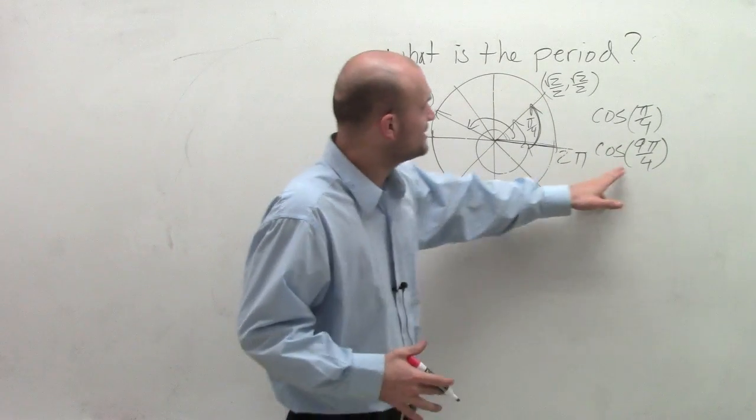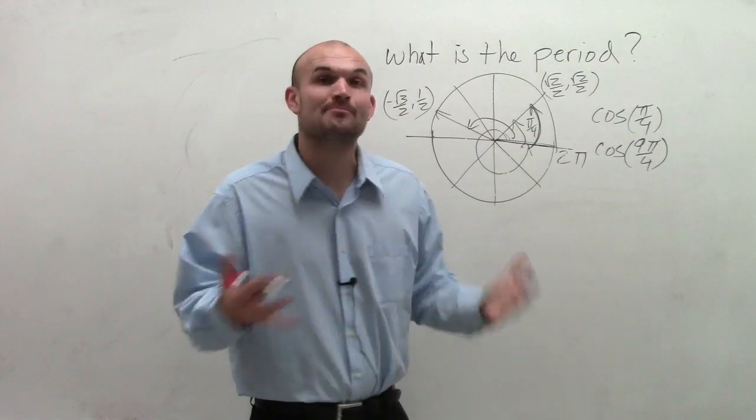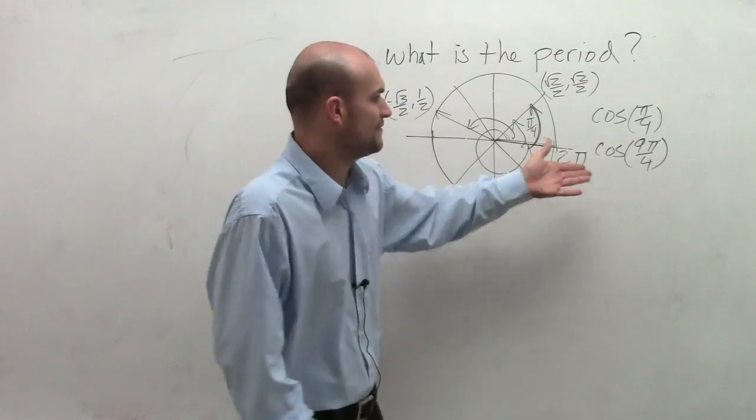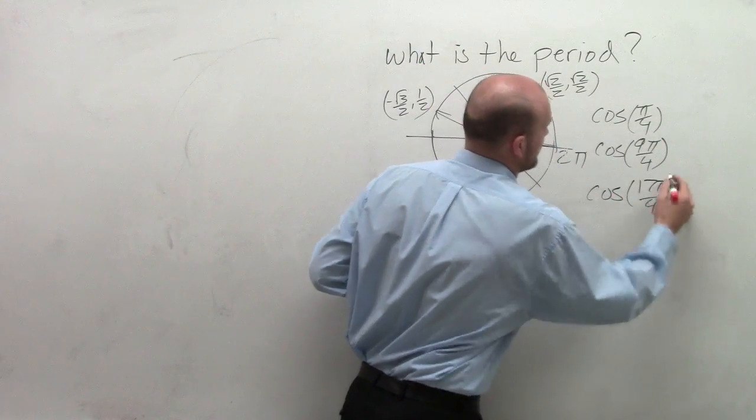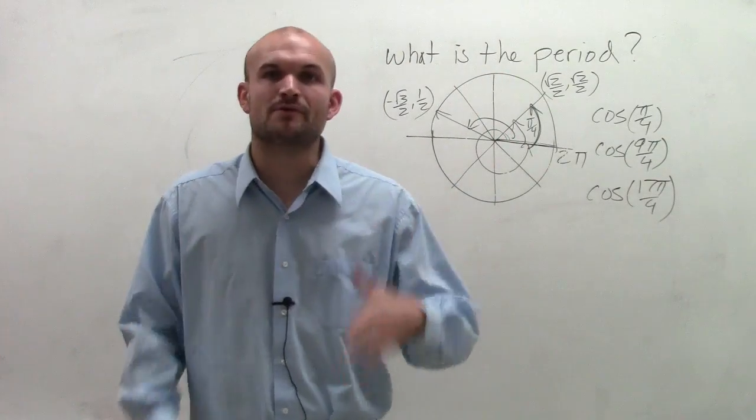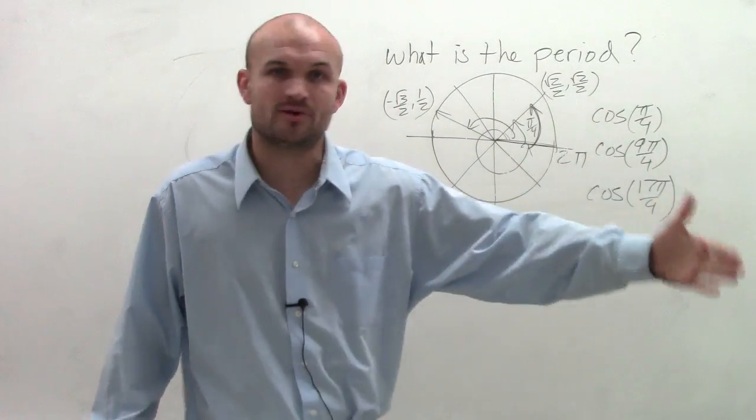All we need to do is just add again another 2 pi, and we're going to get back to our exact same point again. So if I say the cosine of 17 pi over 4, what happens is our graph repeats itself. Even though we have different input values, we're getting the exact same output values.